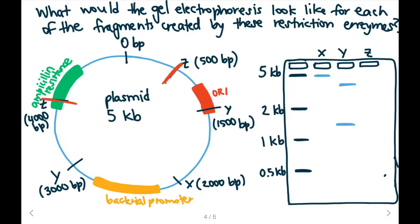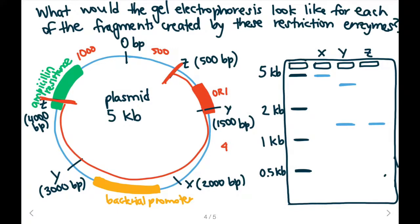Finally, cutting with restriction enzyme Z gives a fragment of 1,000 plus 500 base pairs — 1,500 base pairs total, shown at 1.5 KB on the gel. The second fragment is 4,000 minus 500 base pairs, giving 3,500 base pairs, shown on the gel accordingly. In this way, we can use a plasmid and its restriction enzyme cut sites to determine what the gel electrophoresis would look like.